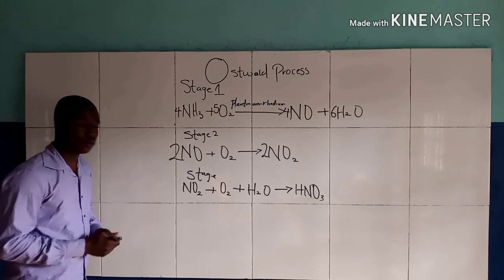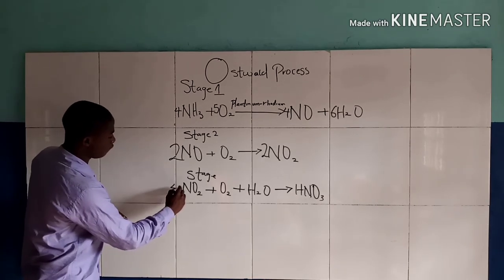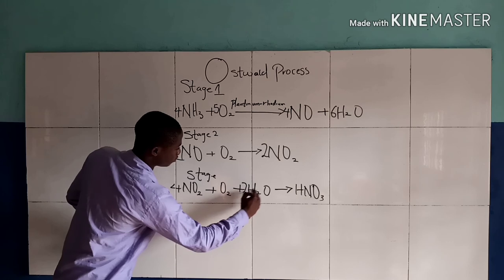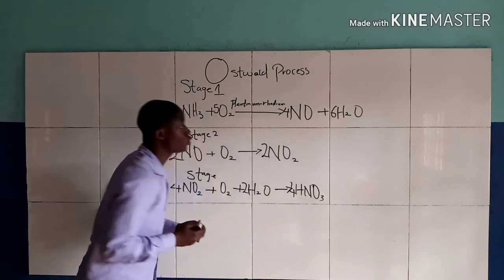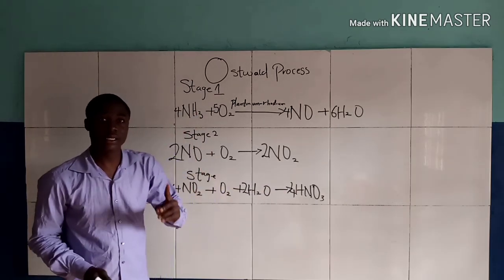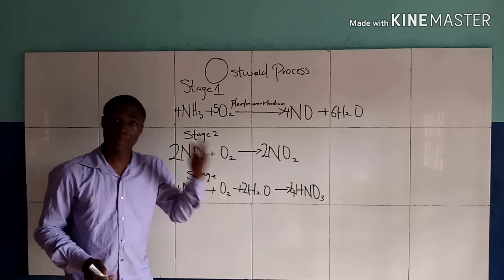So, let's balance the equation. So, we put 4, 2, and 4. So, HNO3 is the final product. Thanks for watching.